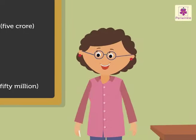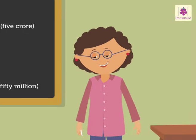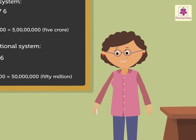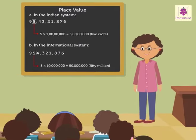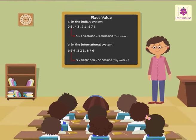Wasn't it easy to find out the place values in both the systems?